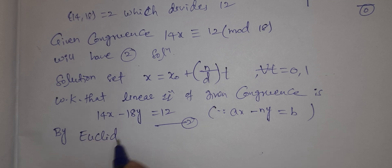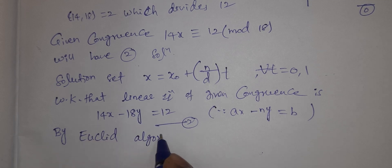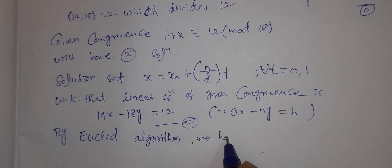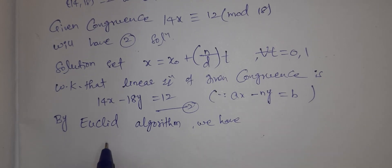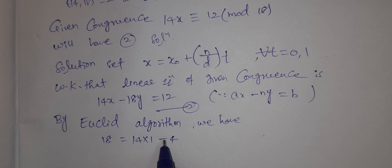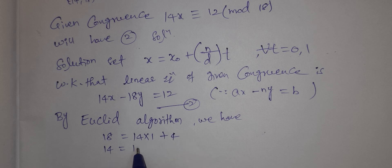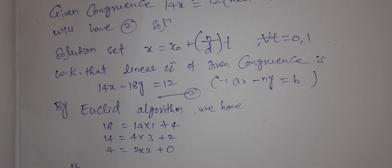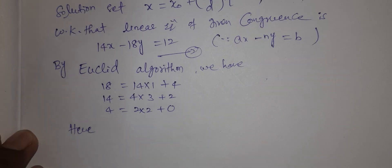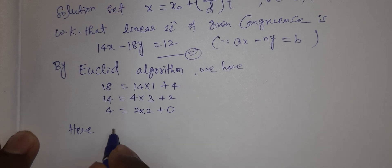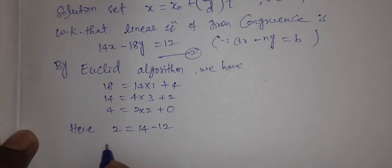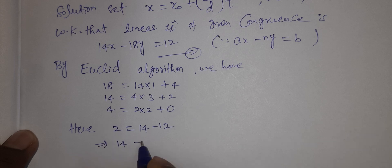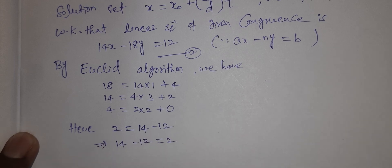By Euclidean algorithm: 18 = 14·1 + 4; 14 = 4·3 + 2; 4 = 2·2 + 0. Back-substituting: 2 = 14 − 12, so 14 − 12 = 2.